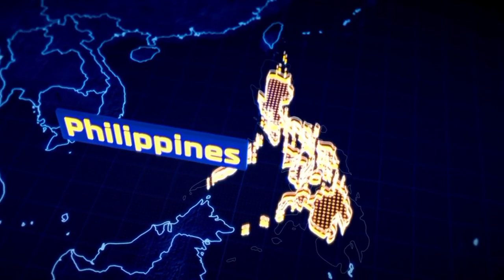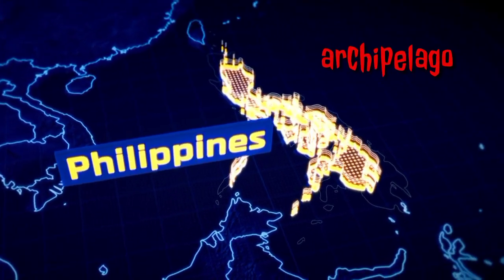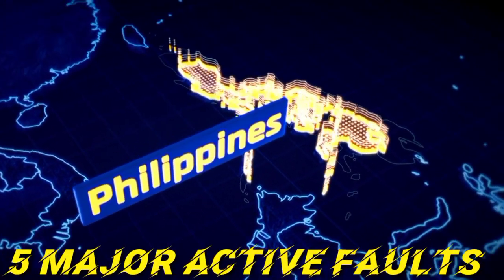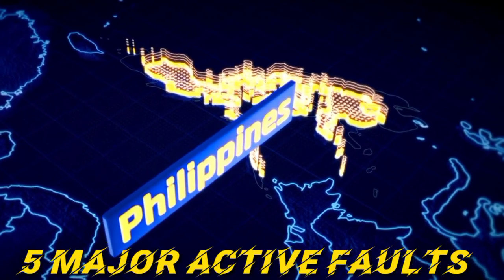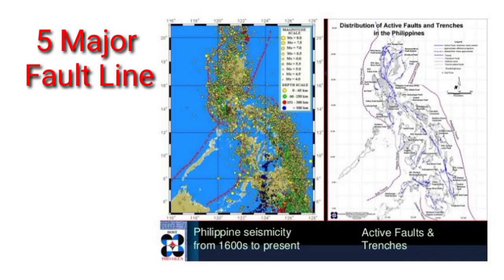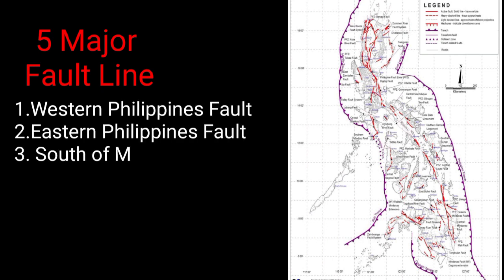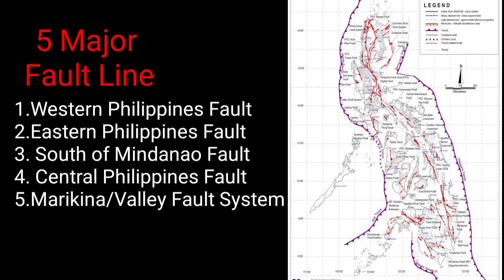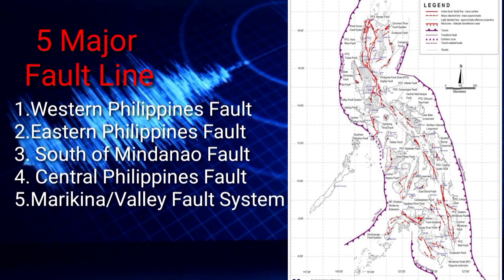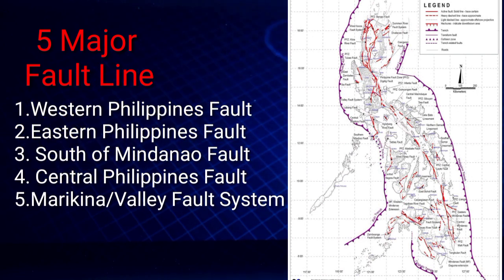Our country, which is an archipelago, consists of numerous faults. There are five major active fault lines in the country: the Western Philippine Fault, Eastern Philippine Fault, South of Mindanao Fault, Central Philippine Fault, and Marikina Valley Fault System. The Central Philippine Fault, consisting of the Guinayangan, Masbate, and Central Leyte Fault, are the most seismically active regions transecting the islands of Bondoc to Leyte.